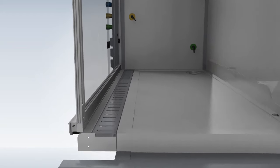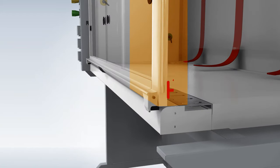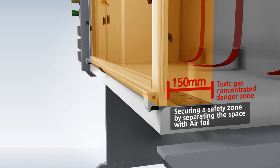The space in between a front door to the 150 millimeters from the door is considered to be a toxic gas-concentrated danger zone. But, the CHC Lab fume hood secures a safety zone by separating the danger zone with its airfoil.